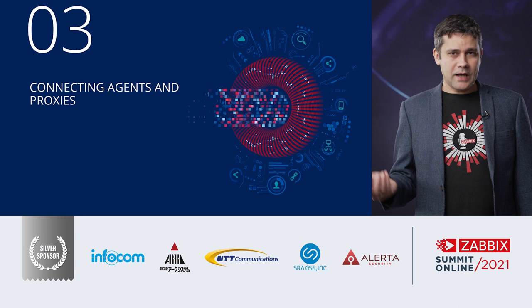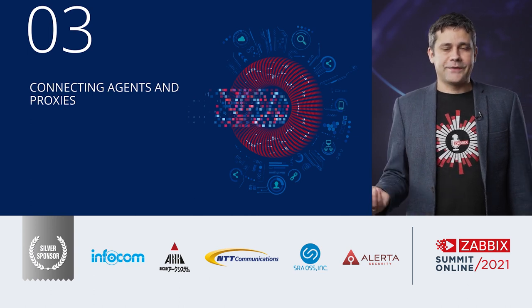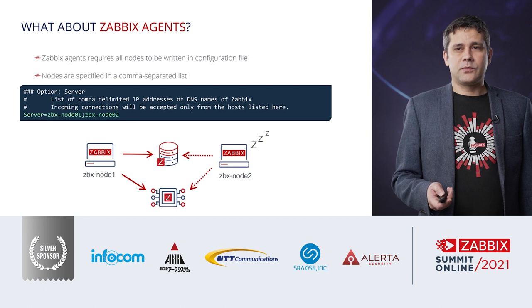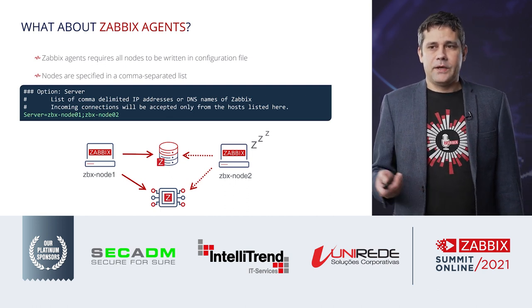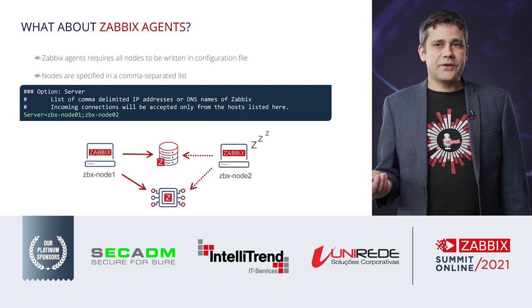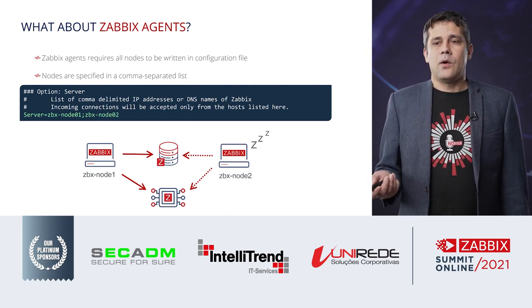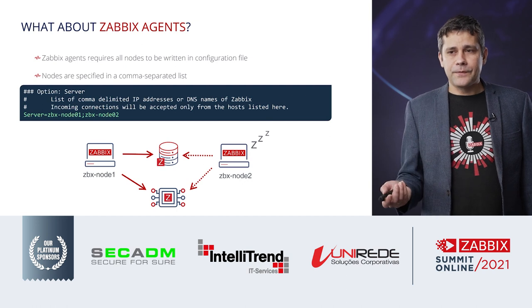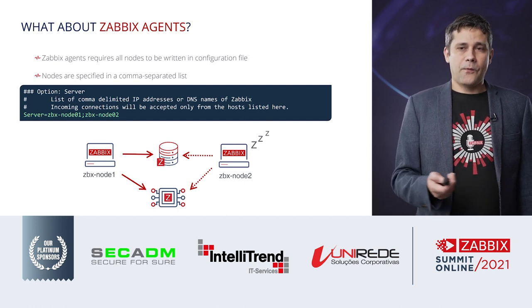Now, how to connect agents and proxies to your Zabbix cluster. Starting with the simpler scenario — passive agents: in the Server field, which controls incoming connections, just specify the addresses or DNS names of each node. In this example, ZBX node 1 and ZBX node 2. The agent will accept connections from any of those nodes and it will just work.